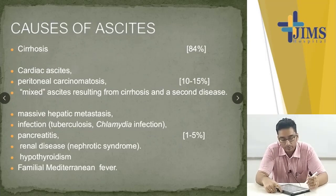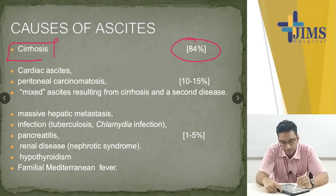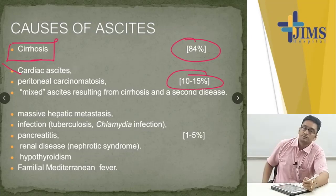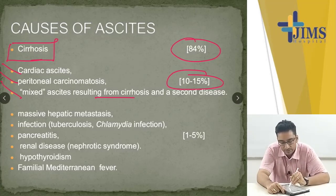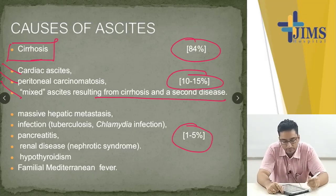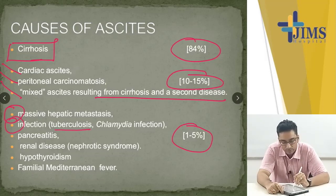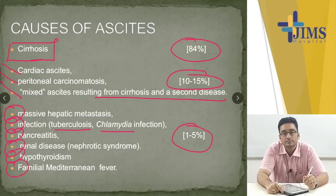Causes of ascites are very important. 84% of all ascites are due to cirrhosis. The next 10 to 15% are cardiac ascites due to heart failure, peritoneal carcinomatosis, or mixed ascites. Rare causes (1 to 5%) are massive hepatic metastasis, infections like tuberculosis and chlamydia, pancreatitis, renal disease, hypothyroidism, and familial Mediterranean fever.